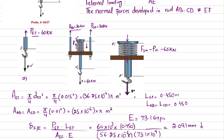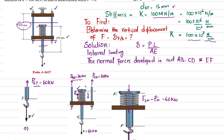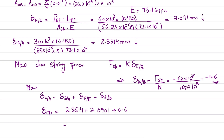Total deflection of point F with respect to point A equals: δ_B/A + δ_E/F + δ_E/B = 2.3514 + 2.0901 + 0.6 = 5.04 mm, and that displacement is downward.